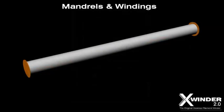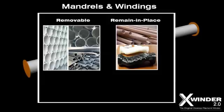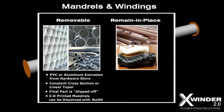The X-Winder can build from two types of mandrels: removable or remain in place. Mandrels are not provided with the X-Winder kit. Removable mandrels can be purchased at the local hardware store; PVC or aluminum extruded parts are recommended. Removable mandrels can have a constant convex cross section or can have linear taper from one end to the other. The final cured part is slipped off and removed from the mandrel after curing. Soluble 3D printed mandrels can be more complex in shape and removed by dissolving in a chemical solution such as sodium hydroxide.